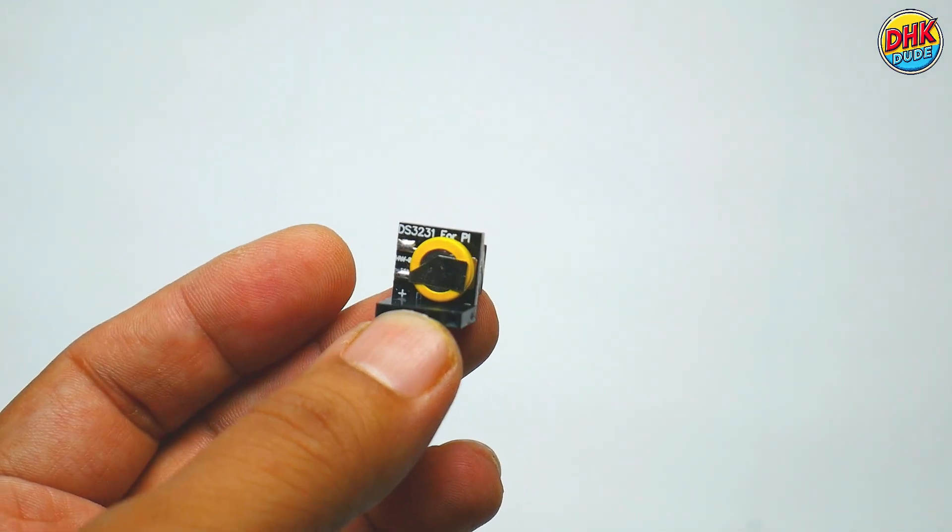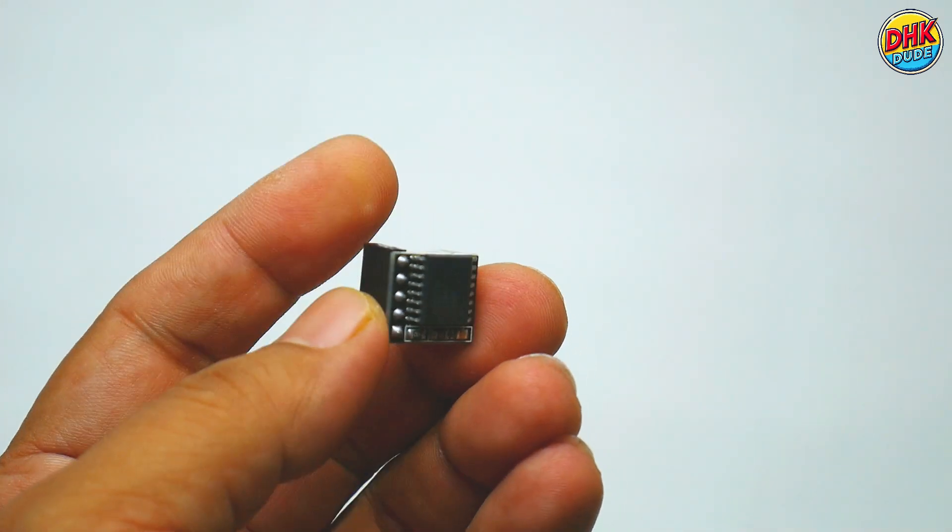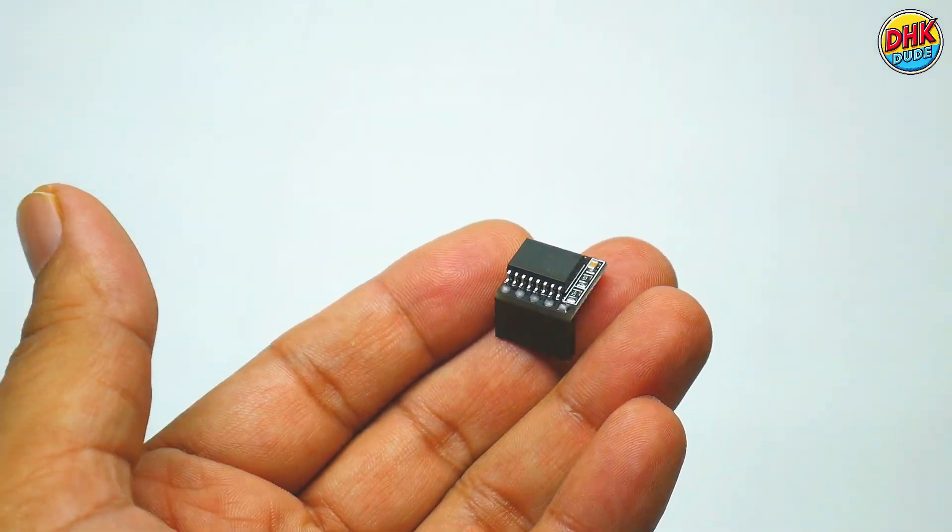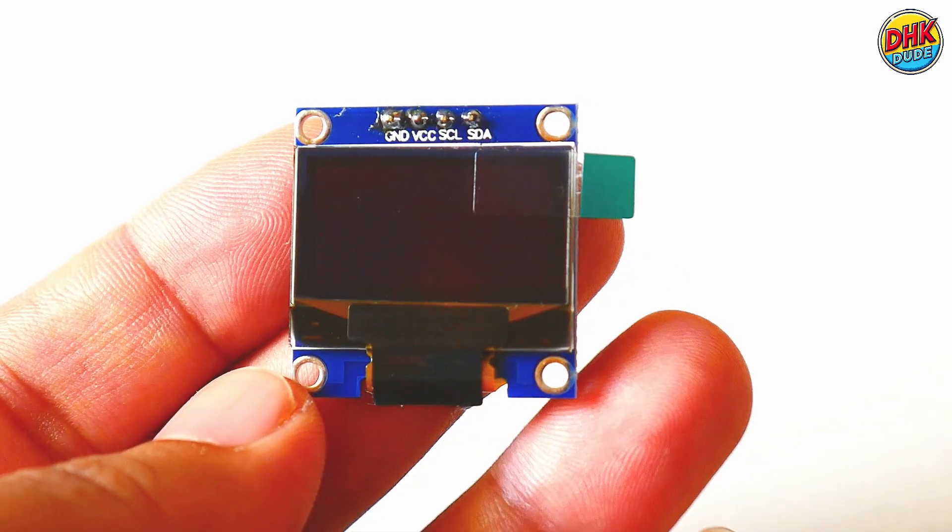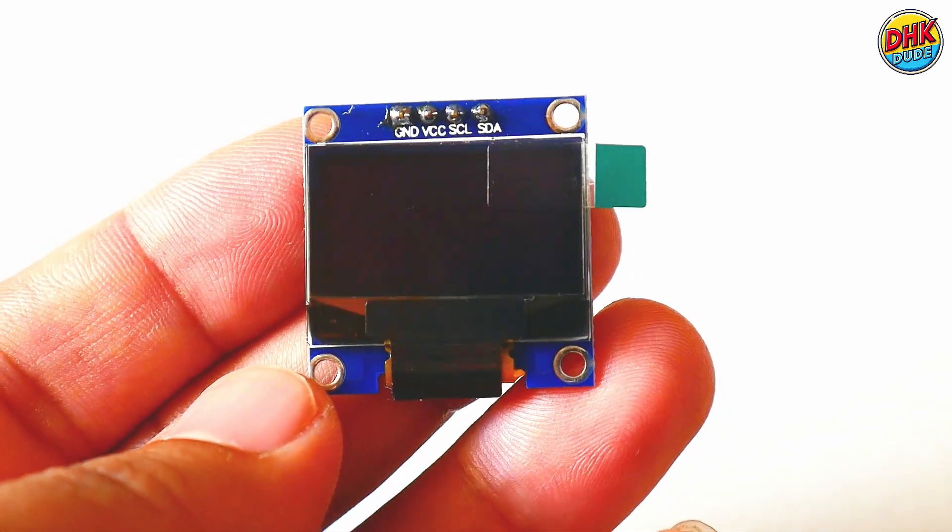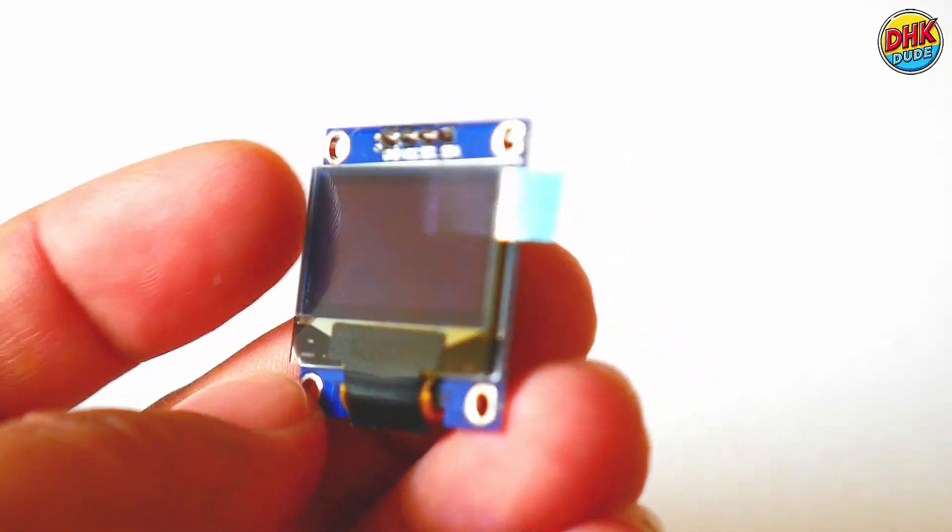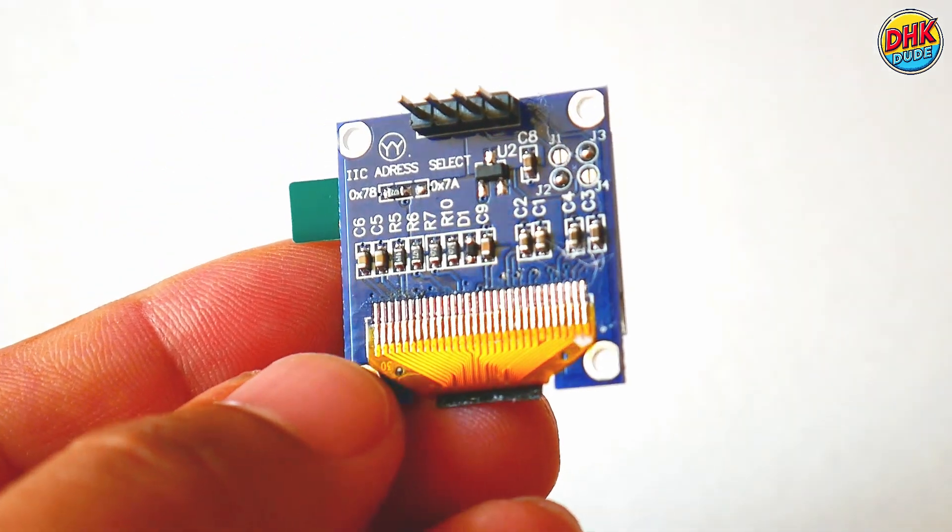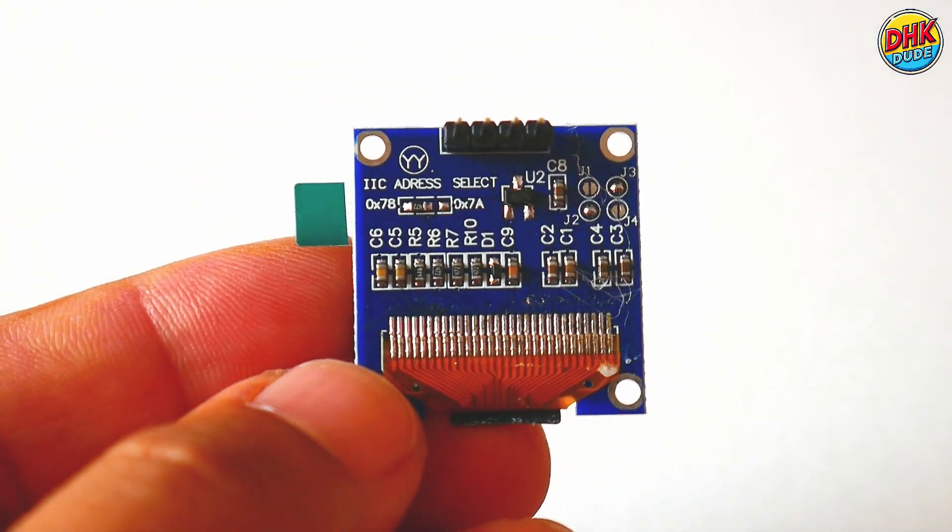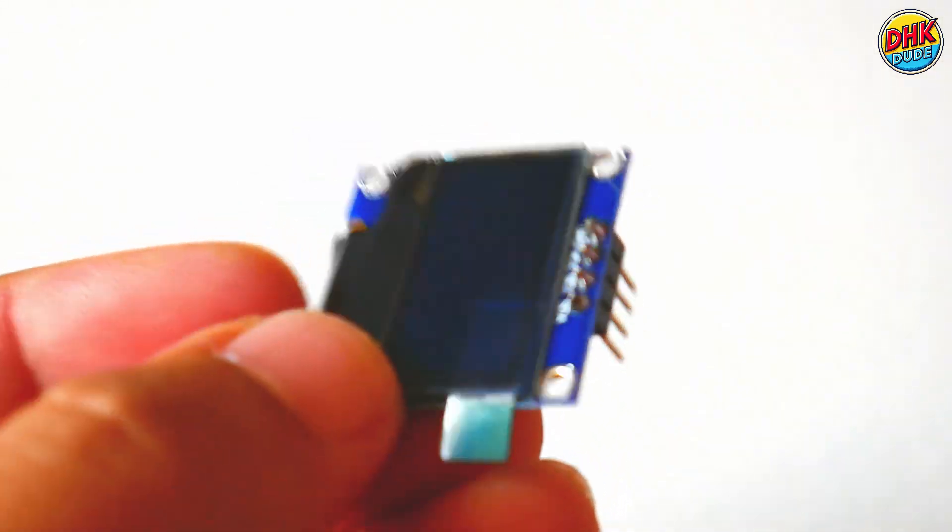We will need DS3231 I2C RTC module to sync our clock with actual time. We are also using OLED screen to display time on it. However, it is not necessary to use for this project. We will display actual time and date on the screen. We have already used this screen in our previous projects.